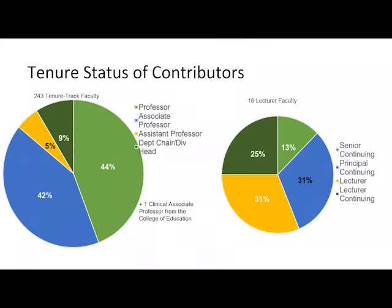Looking at tenure status, it's initially what you'd expect: 44% are professors and 42% are associate professors — they've already been through the tenure process and know what's going on. Assistant professors are still battling it out and may not be as inclined toward open access outlets, especially as their discipline says you must publish in specific subscription journals for tenure. We also have 16 lecturer faculty compared to the 243 tenure track, but it is encouraging to see they have a presence in the repository.